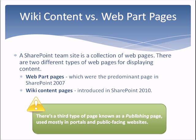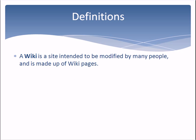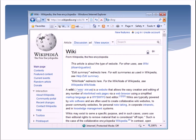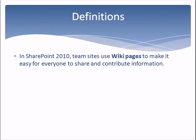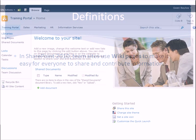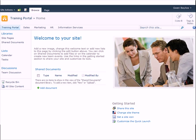First, some definitions. A wiki is a site intended to be modified by many people and is made up of wiki pages. The most popular example of a wiki site is wikipedia.com. In SharePoint 2010, team sites use wiki pages to make it easy for everyone to share and contribute information. For an example of a wiki page, look no further than the team site's homepage.